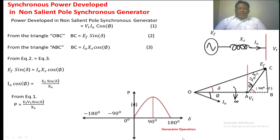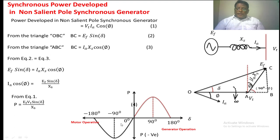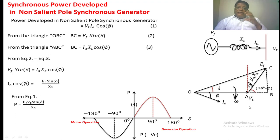This is generator operation. If the same machine operates as a motor, we get the same profile on the negative axis — this is the P vs. sin(delta) curve for motor operation. In the case of a generator, all phasors rotate in the anti-clockwise direction, so VT leads EF, because EF is generated in the stator winding and VT is the terminal voltage — EF is the cause, VT is the effect. In the case of a motor, the voltage applied to the stator winding is the cause and EF is the effect, so EF leads VT.